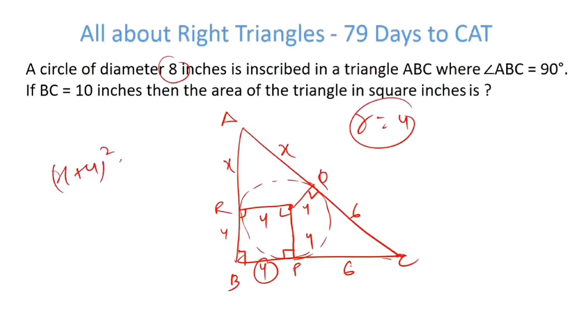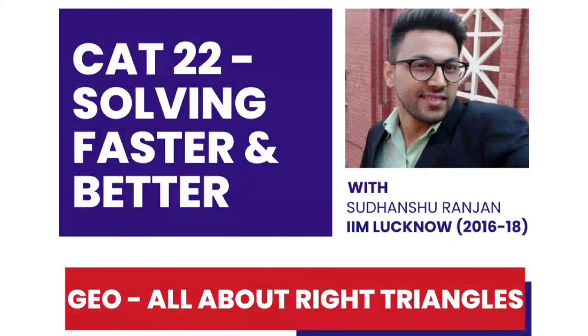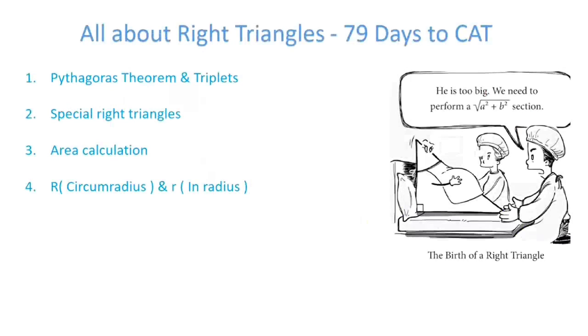If you just solve this, 4x is equal to 80, x is equal to 20. So now this is done. So what's the area of the triangle? This becomes 24 and this is 10. So 24 into 10 into 2, so this becomes 120.